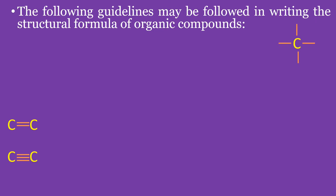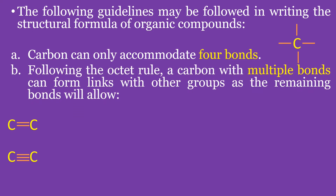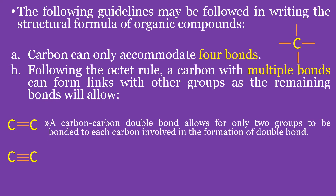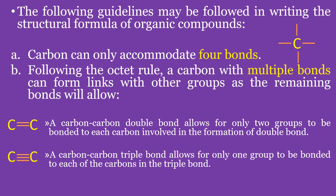The following guidelines may be followed in writing the structural formula of organic compounds. Carbon can only accommodate four bonds. If all bonds to carbon are single bonds, one should draw four single lines around carbon to designate the bonds available to link with carbon or other selected elements. Following the Octet Rule, a carbon with multiple bonds can form links with other groups as the remaining bonds will allow. A carbon-to-carbon double bond allows for only two groups to be bonded to each carbon involved, while a carbon-to-carbon triple bond allows for only one group to be bonded to each carbon in the triple bond.